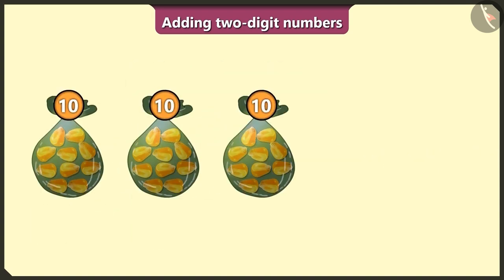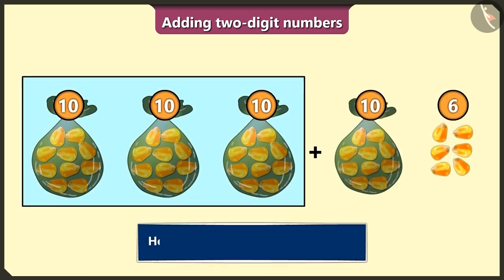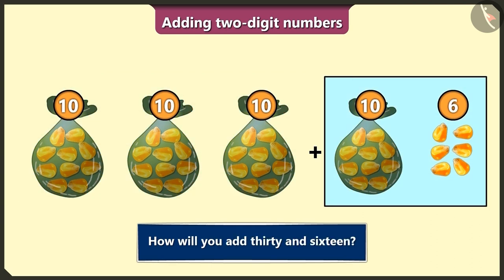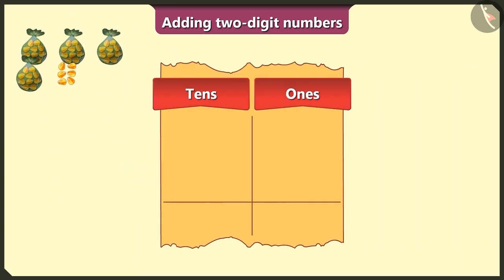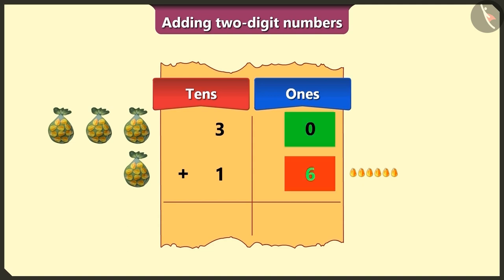Now see, here are 30 grains. To these, I will add 16 more. So, how do we add 30 and 16? To write number 30, we will write 3 in tens box and 0 in the ones box. To add 16 to 30, write 1 in the tens box and 6 in the ones box. Now, first in the ones box, we will add the numbers 0 and 6, that will give us 6.